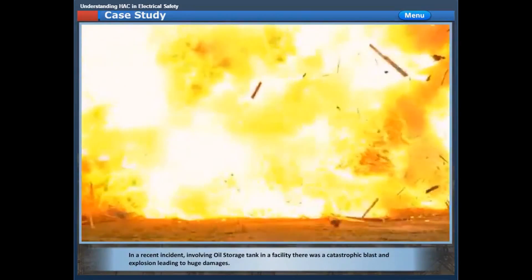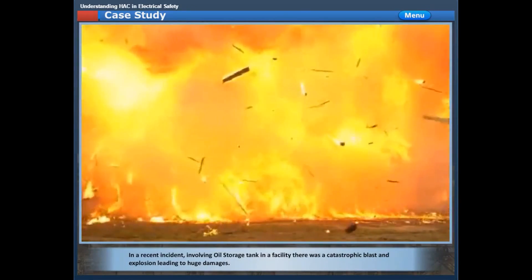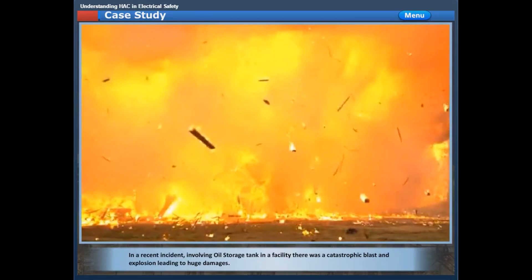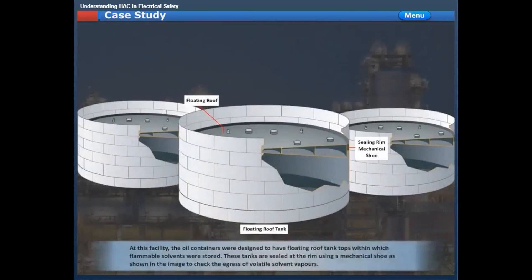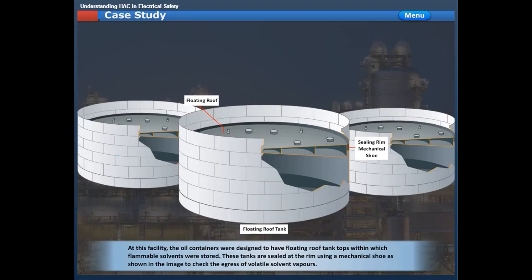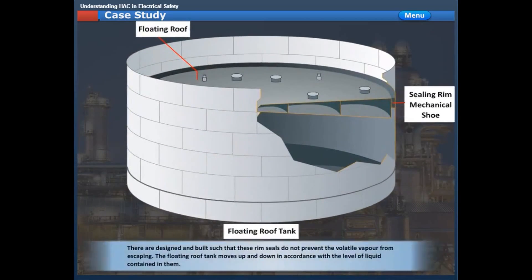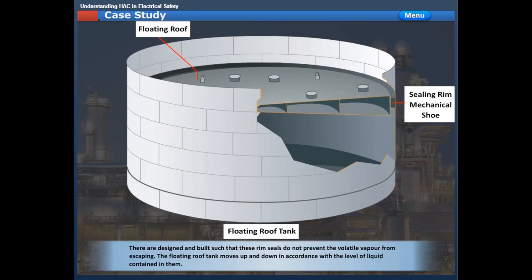In a recent incident involving an oil storage tank in a facility, there was a catastrophic blast and explosion leading to huge damages. At this facility, the oil containers were designed to have floating roof tank tops within which flammable solvents were stored. These tanks are sealed at the rim using a mechanical shoe, as shown in the image, to check the egress of volatile solvent vapors. They are designed and built such that these rim seals do not prevent the volatile vapor from escaping, and the floating roof tank moves up and down in accordance with the level of liquid contained in them.